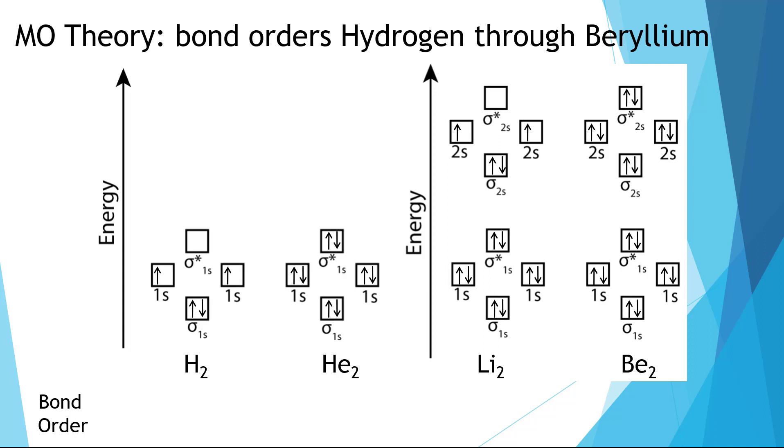We can look at hydrogen and see that we have two electrons in the bonding orbitals and none in the antibonding orbitals. So we'll have two minus zero divide by two equals one.